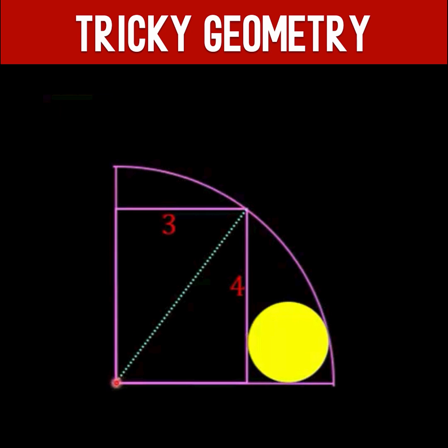Let's begin by constructing a diagonal of our inscribed rectangle. This diagonal is also a radius of our quarter circle. Now since we have here a rectangle this side here must be the same as this side with the length of three units because opposite sides of a rectangle are equal.